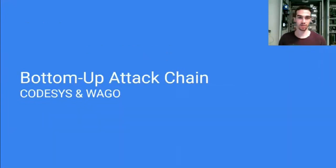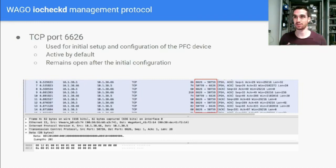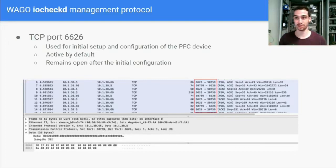In our research we developed two main methodologies for cloud attacks: the top-down and the bottom-up. The top-down starts with attacking an engineering station, then going up to the cloud and attacking all the managed PLCs. The bottom-up attack starts with a PLC, then we climb our way up to the cloud to take control over the entire operation. Let's start with the bottom-up attack. We used the WAGO device to demonstrate this attack, and WAGO devices have a configuration port open on port 6626, used for initial configuration like setting a hostname or subnet for the device. This port remains open after the initial configuration, giving us a big attack surface.